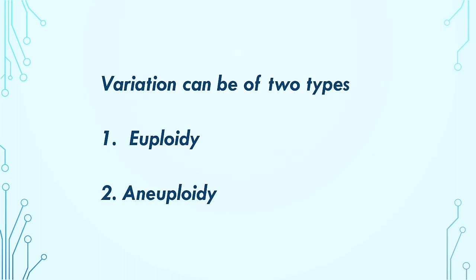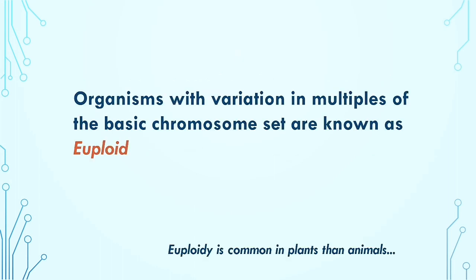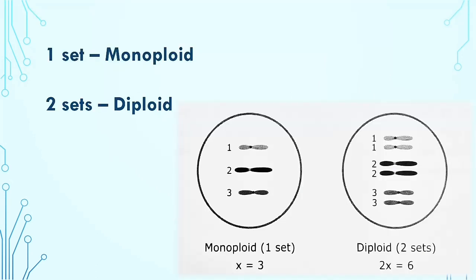The variation based on the number of chromosomes can be of two types: one is euploidy and another is aneuploidy. When the variation is based on the number of sets of chromosomes present, those are known as euploid — that is, the organism has multiples of the basic sets of chromosomes. Euploidy is much more common in plants than in animals and is often observed in higher order plants.